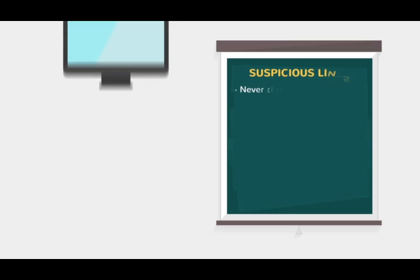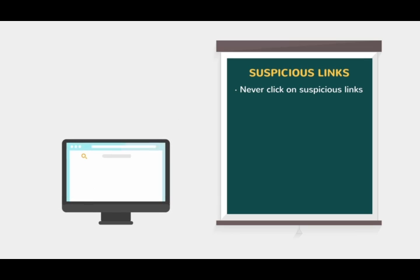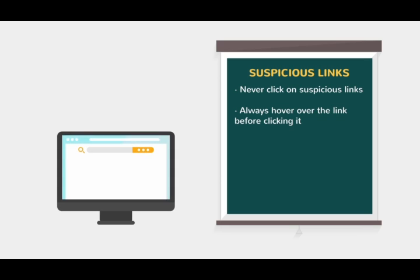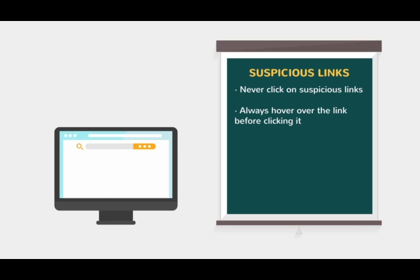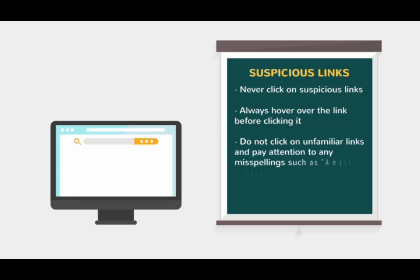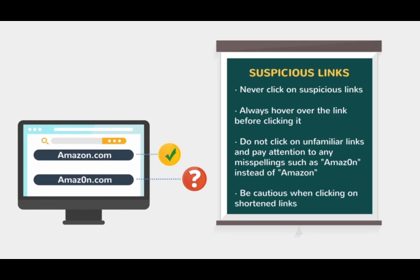Don't click on suspect links. If a link looks hidden or comes from an unfamiliar source, don't click it. It might take you to an unspecified location and possibly inject malware into your machine when you attempt to download the page. Be aware of any discrepancies in links that look mostly but not entirely familiar, such as 'Amazon' with a zero instead of an O, and any other shortened links.